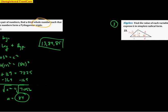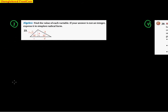Number three: find the value of each variable expressed in simplest radical form. Looking at the picture, I see a right angle, a 45-degree angle, and a 30-degree angle — this involves special right triangles: the 45-45-90 and the 30-60-90. The given value, 7√2, is on the triangle on the left, which is the 45-45-90.